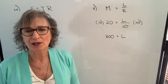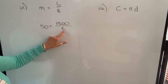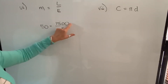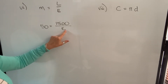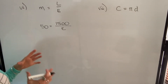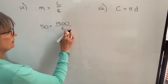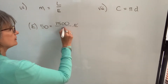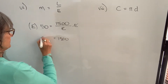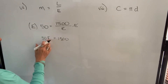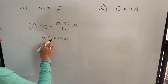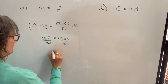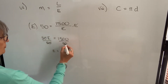Let's solve mechanical advantage again, but this time finding effort. If mechanical advantage is 50 and load is 1500, we want to find effort E. The unknown is in the denominator, so first we multiply both sides by E to get it out. That gives 1500 equals 50 times E. Then we divide both sides by 50. 50 cancels, and 1500 divided by 50 is 30, so E equals 30.